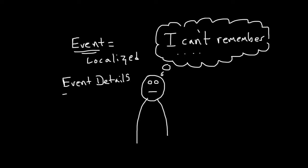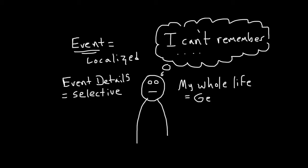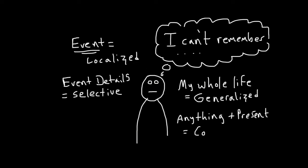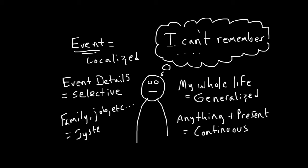In selective amnesia, the individual forgets event's details. In generalized amnesia, the memory loss encompasses the individual's entire life. In continuous amnesia, the individual cannot recall events up to a specific time, including the present. In systematized amnesia, there's a loss of memory for certain categories of information, such as all memories related to one's family.